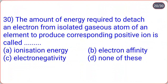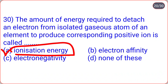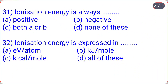The amount of energy required to detach an electron from an isolated gaseous atom of an element to produce a corresponding positive ion is called ionization energy — option A. Ionization energy is always positive — option A. Ionization energy is expressed in electron volt per atom, kilojoule per mol, or kilocalorie per mol — correct option is D, all of these.